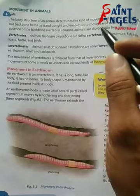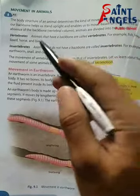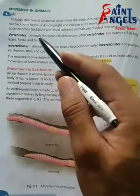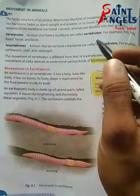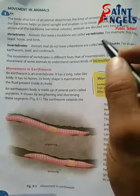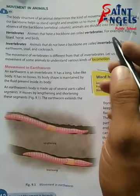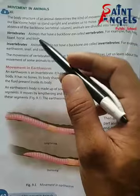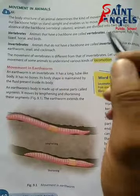Based on the presence and absence of the backbone, animals are divided into two groups. Backbone ke presence aur absence ke base par, animals ko do group mein divide kiya jata hai. First: vertebrates. Animals that have a backbone are called vertebrates. Jin animals ki backbone hoti hai unhe vertebrates kaha jata hai. For examples: fish, frog, lizard, horse, and birds — ye sab bhi vertebrates ke examples hain.